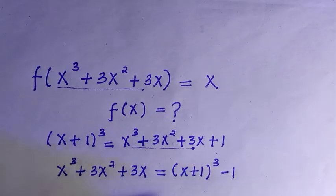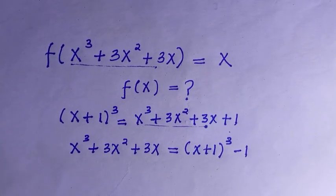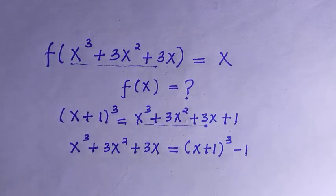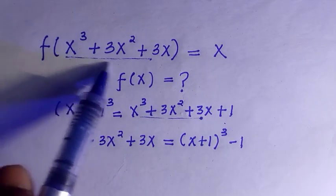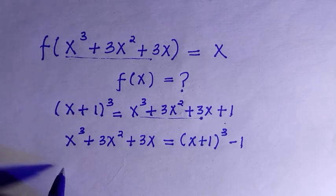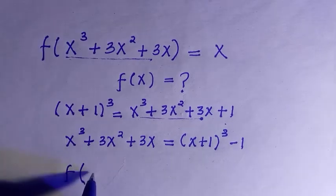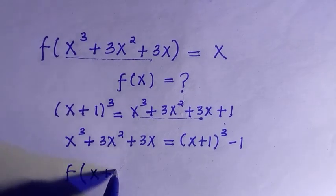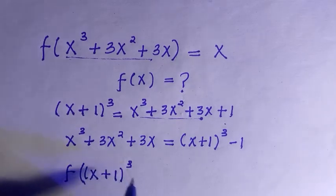So what I'll do here is replace all of this with (x+1)³ - 1 in the function, and we have f((x+1)³ - 1) = x.